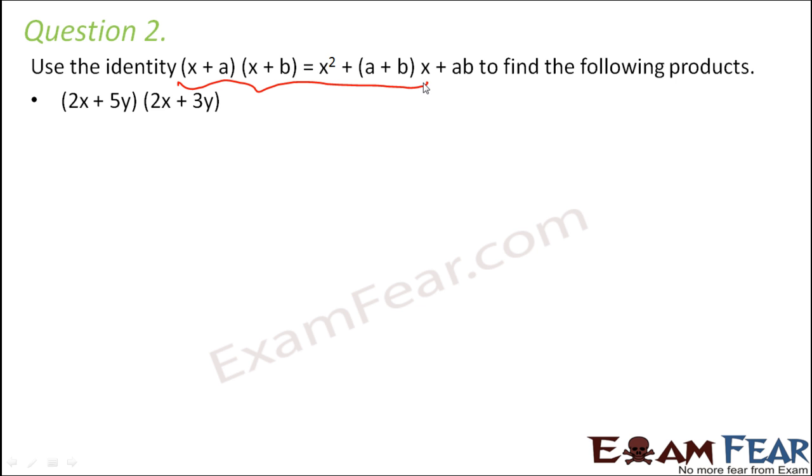Many times you come across a situation where you are multiplying two binomials such that one term of the binomial is same but the other term is not the same. If both terms are same, then it is (a + b)². If only one term is same and the other term is not same, then what do we do?